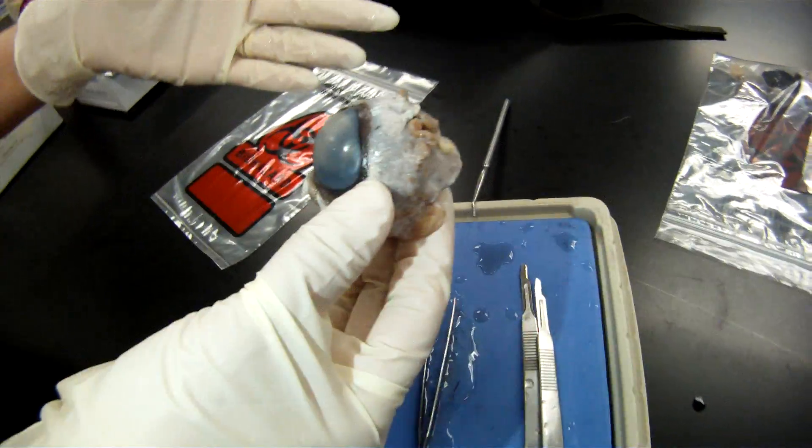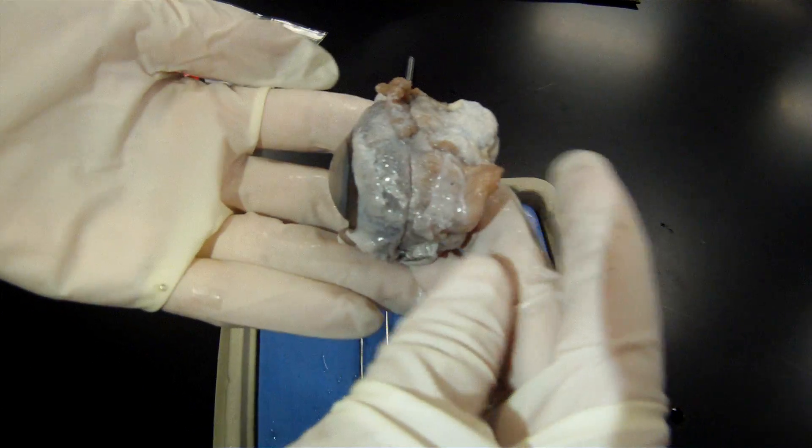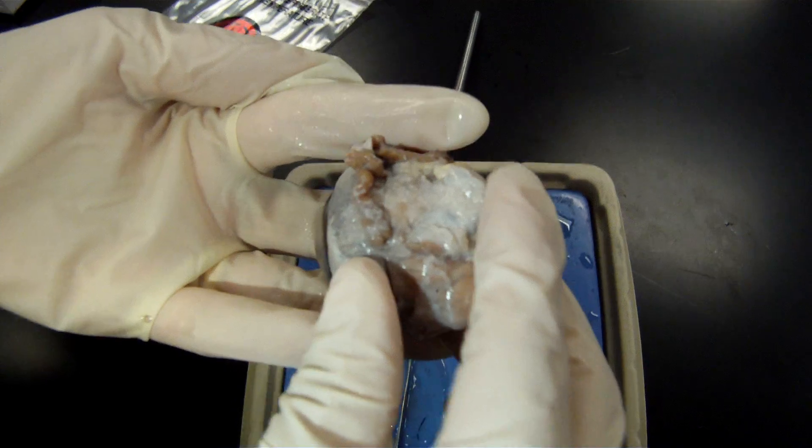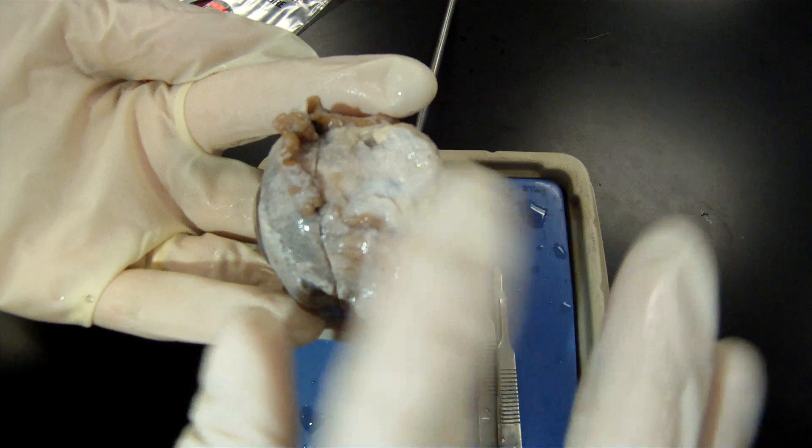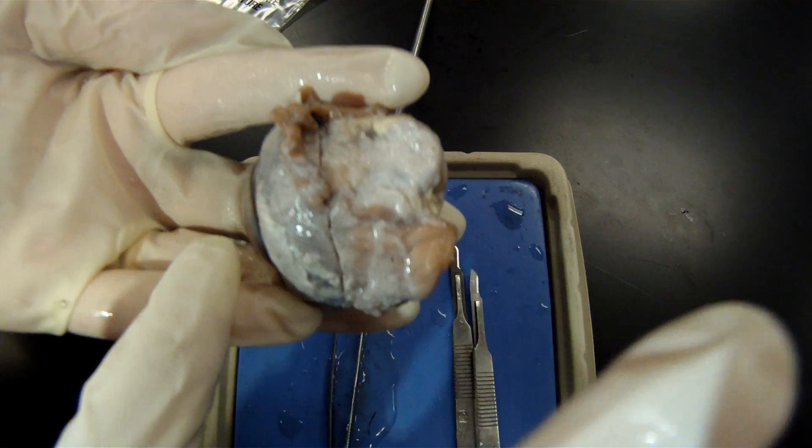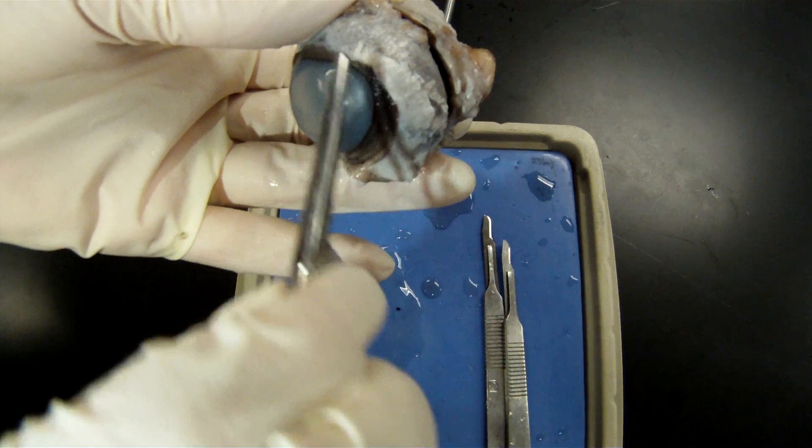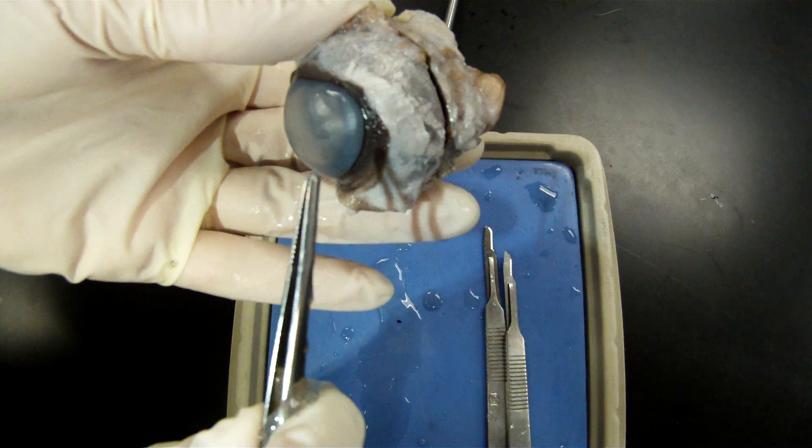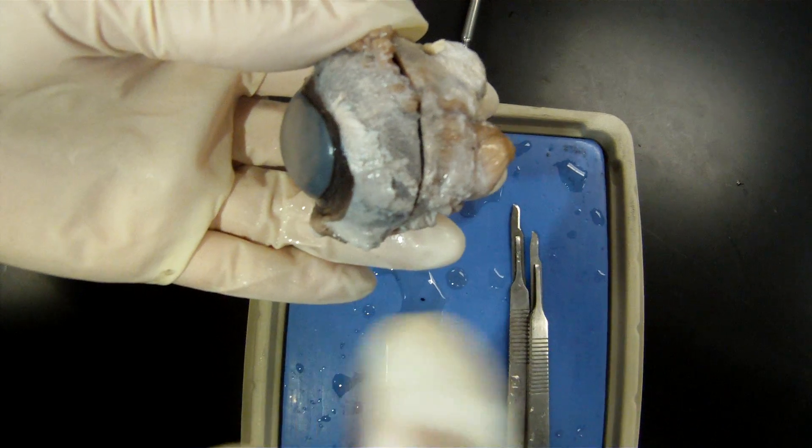This is where the lacrimal gland would be. Okay, we're live. So this is the outermost portion of the eye, or outermost layer: sclera and the cornea. This area is bulbar conjunctiva. The lacrimal gland is not here because that's underneath the eyelid.